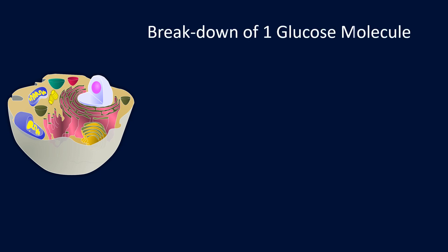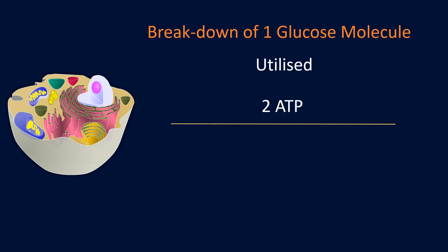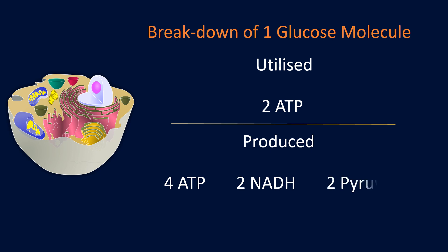As discussed in a previous video, glycolysis is the metabolic pathway in which glucose is broken down into two molecules of pyruvate. Glycolysis takes place in the cytosol of cells, and during this process, two ATP molecules are utilized, and four ATP, two NADH, and two pyruvate molecules are produced.